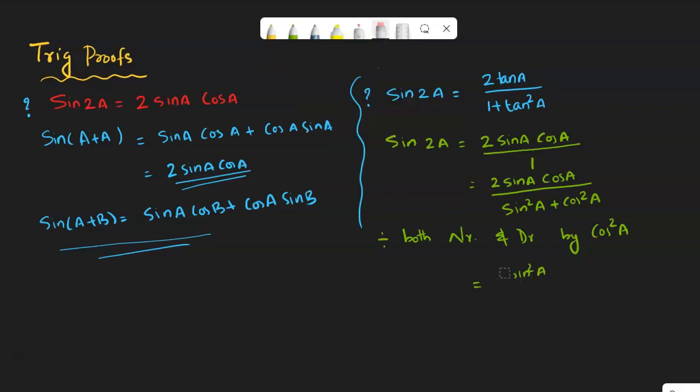It is 2 sin a cos a divided by cos square a, whole divided by cos square a. What will happen? Sin square a plus cos square a divided by cos square a.